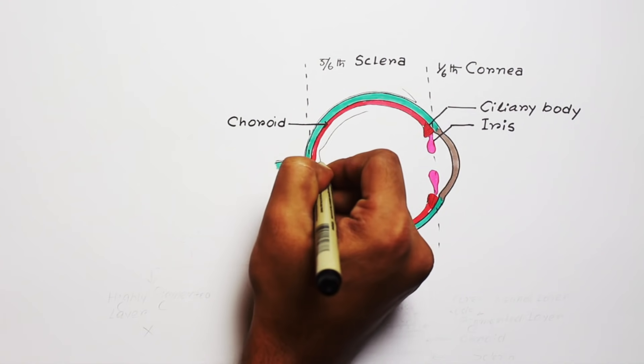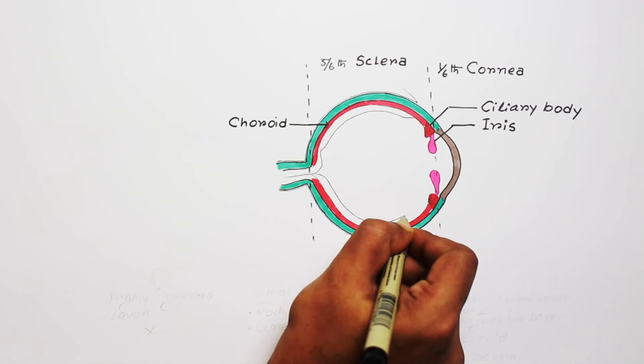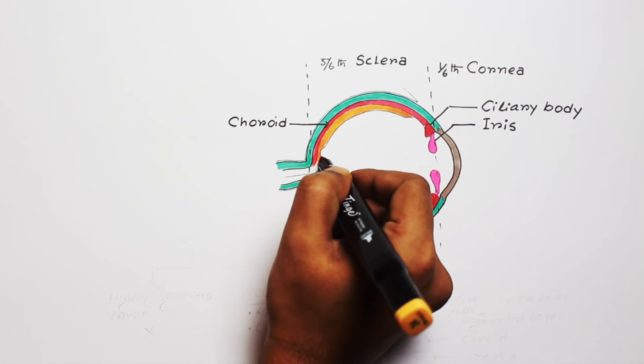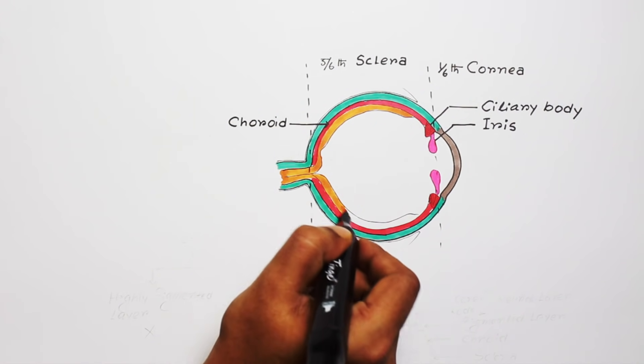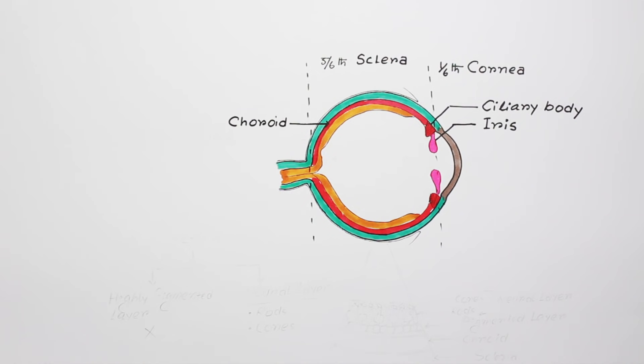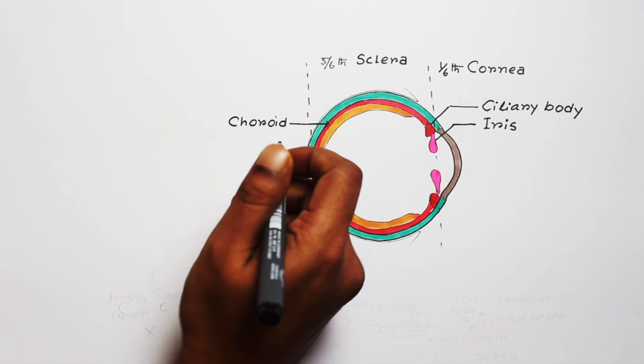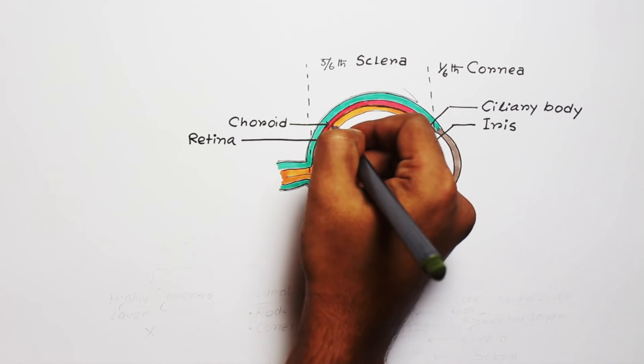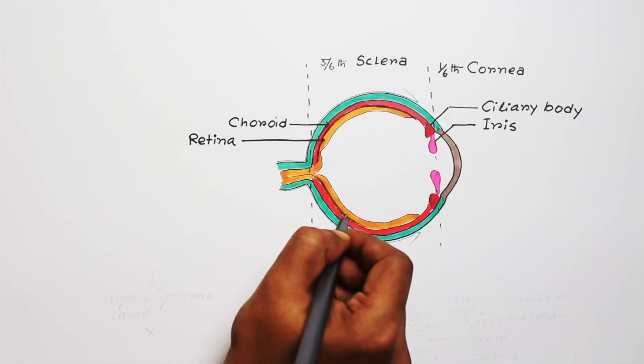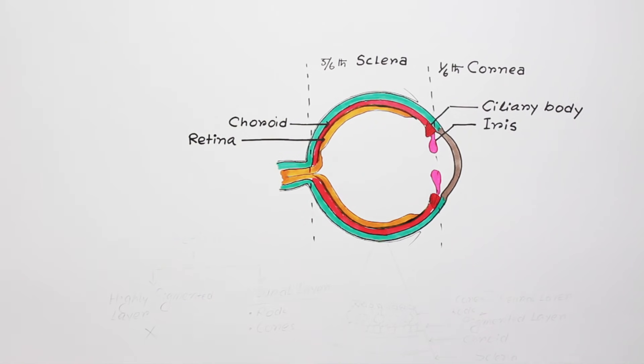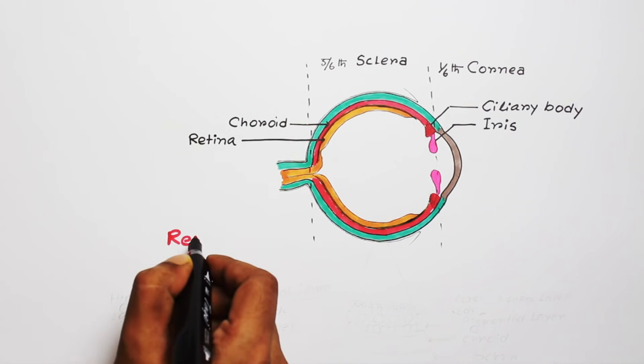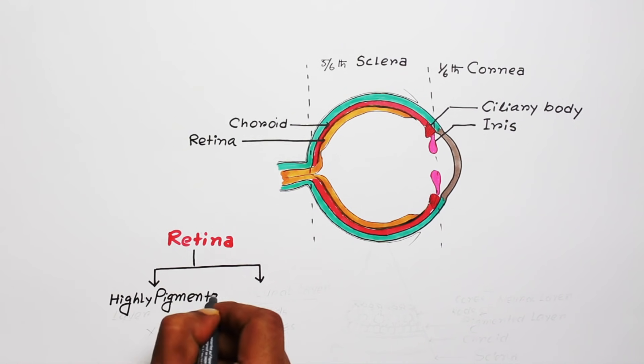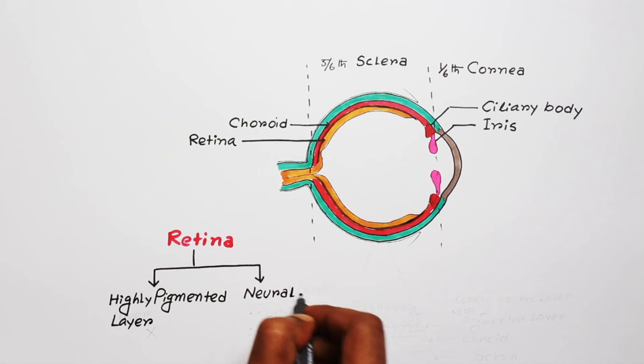Now, the most important part is the inner layer. Only this layer can convert electromagnetic energy into electrochemical signals. This layer is called the retina. If you enlarge this portion, you will see the retina has two parts: one highly pigmented layer and a neural layer. This highly pigmented part is firmly attached with the choroid part.